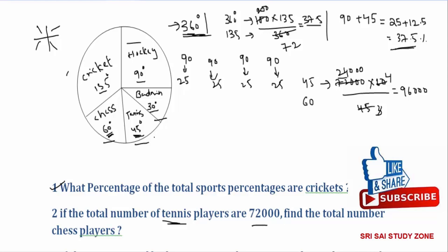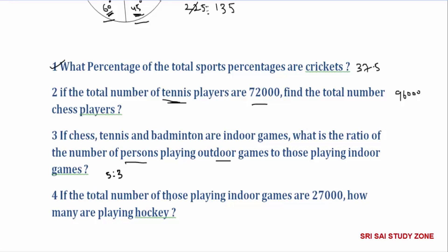Question 4: If the total number of those playing indoor games are 27,000, how many are playing hockey? Indoor total is 135 degrees, which equals 27,000. Hockey is 90 degrees. So 27,000 into 90 divided by 135 — using a factor of 6 and 9 — gives 3,000 into 6, which equals 18,000.